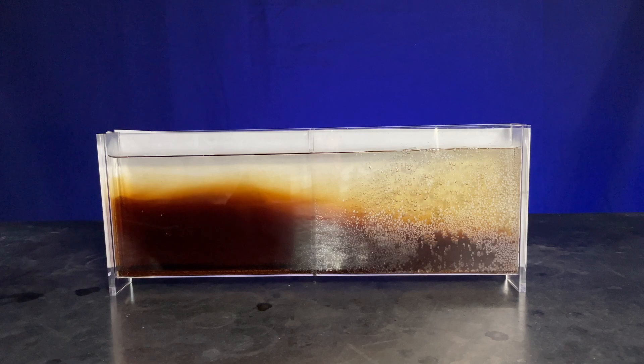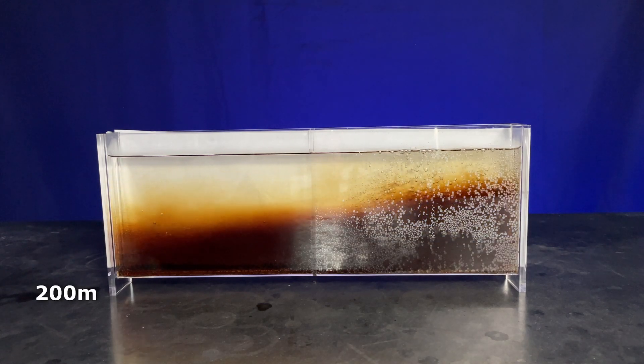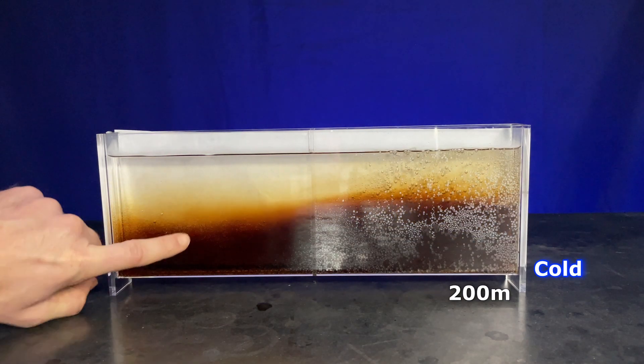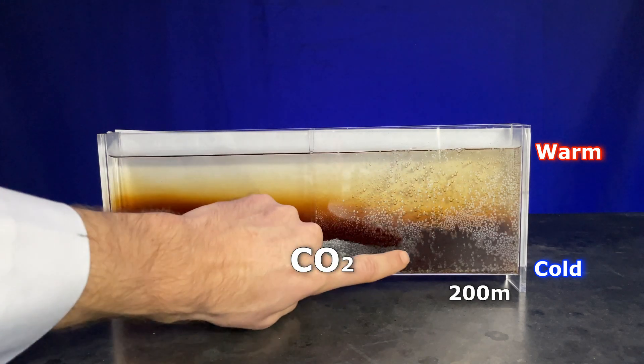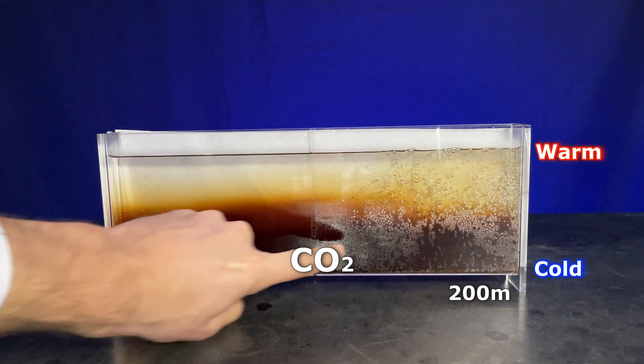Lake Nyos is about 200 meters deep. And when you get deeper, it gets colder. And there's CO2 that gets trapped at the bottom of that lake. And where's the CO2 coming from?